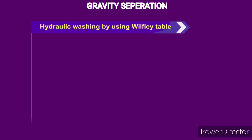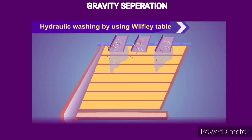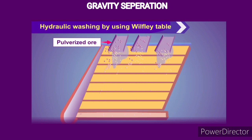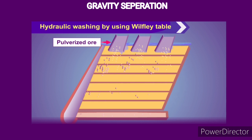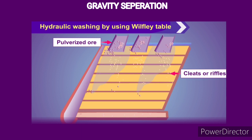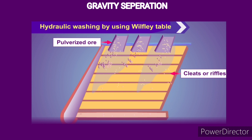We shall first study Hydraulic Washing by using the Will Fly Table Method. The pulverized ore, i.e., the powdered ore, is fed on the top of a slanting floor of the Will Fly Table having fixed wooden stripes called cleats or ripples, which is kept vibrating.